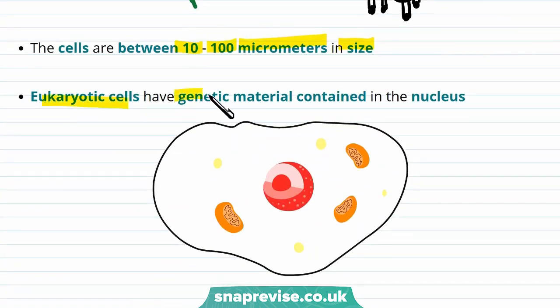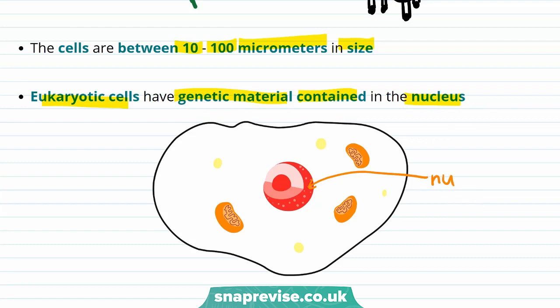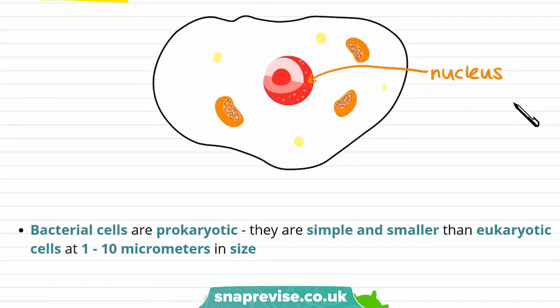Eukaryotic cells have genetic material contained in the nucleus. So this is the nucleus of the cell, and it contains the genetic material of the cell. I'll talk more about the nucleus a bit later on.